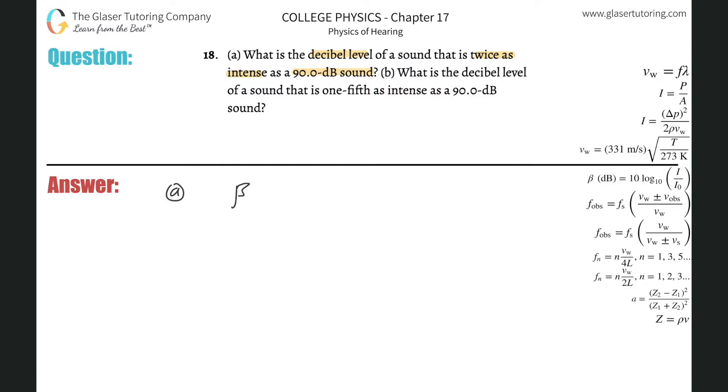So we have this formula that beta measured in decibels is equal to 10 multiplied by the log of base 10 of the intensity that's being heard divided by the threshold of hearing, I sub 0. Remember, I sub 0 is really just the value of 10 raised to the negative 12th.